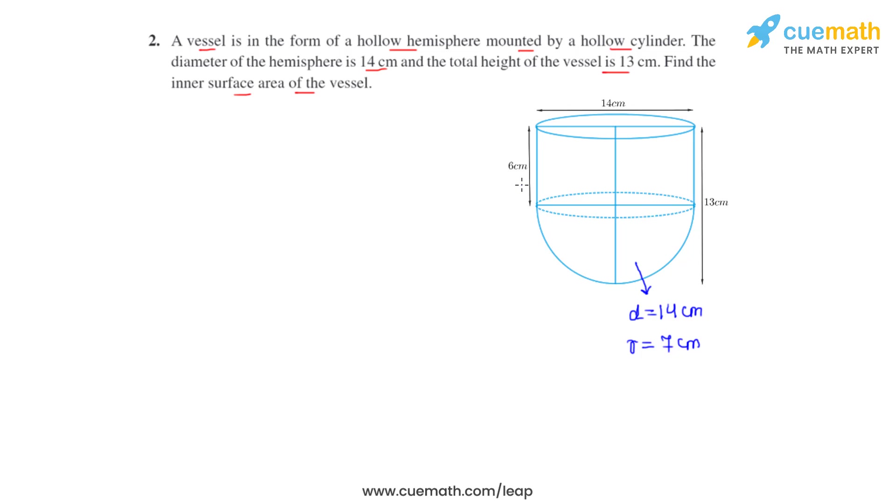Now the next part is to calculate the height of the cylinder, which is already given to us. We can see the height of the cylinder is 6 centimeters. Why? Because the total height of the vessel as given in the question is 13 centimeters. This part, which is the radius of the hemisphere, will be 7 centimeters. So we'll have to subtract this part and the remaining part comes as 6 centimeters. So we know that the height of the cylinder is now 6 centimeters.